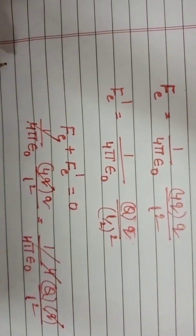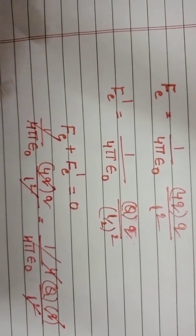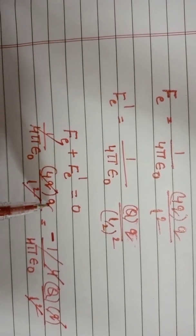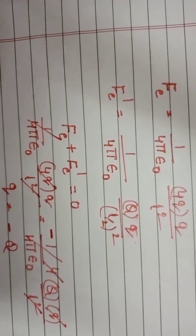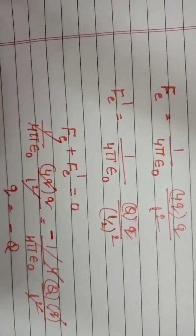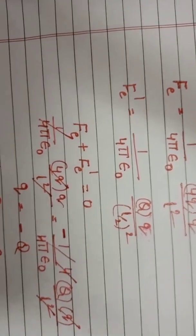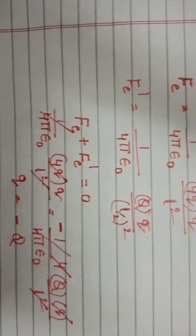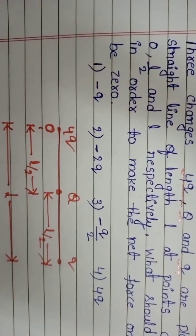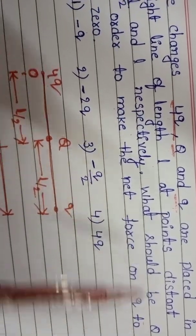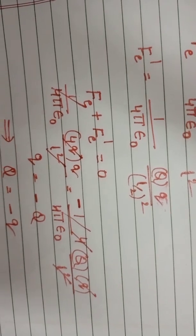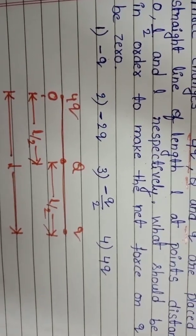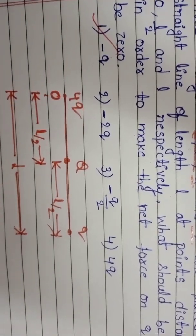4Q also cancels and L² also cancels. On the LHS side we have small q and on the RHS side minus Q. That implies capital Q equals minus q. So capital Q equals minus small q. The first option, minus Q, is correct.